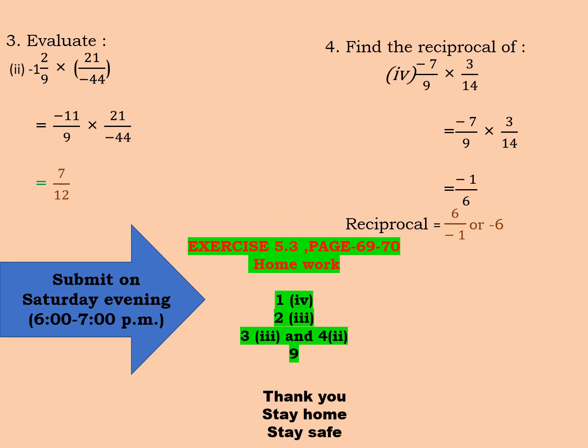Same way, question number 3, subpart 3. Minus 1 whole 2 by 9 into 21 by minus 44. So change it to improper fraction. 9 ones are 9, 10, 11, minus 11 by 9 into 21 by minus 44. Actually we can cancel this minus terms also. 11 ones are 11 and 11 fours are 44. Anything else? Yes, with a table of 3 we can cancel 9 and 21. So 3 threes are 9 and 3 sevens are 21. What is left? 1 into 7 is 7, 3 into 4 is 12.